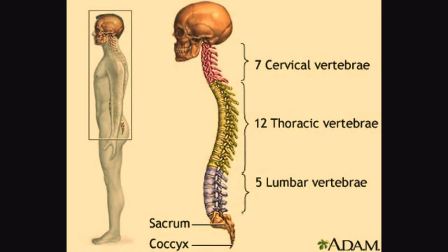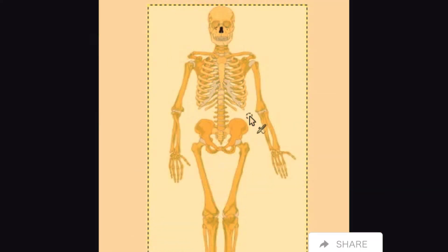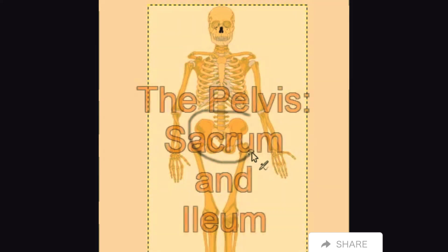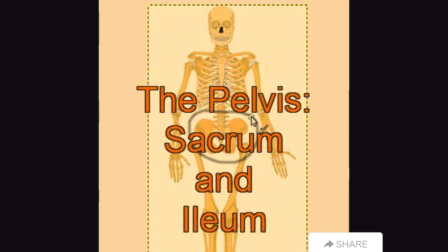We can see here that there are seven cervical vertebra, twelve thoracic vertebra, five lumbar vertebra, and then the sacrum and the coccyx. The pelvis, which includes the sacrum and the ileum, provide the stability for the bottom of the spine.